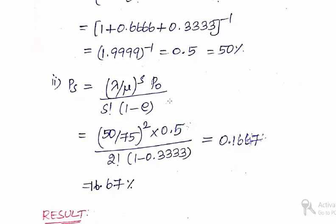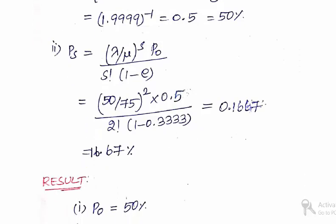The formula is lambda by mu power S into P0 divided by S factorial into 1 minus rho. All the values are known, so by substituting we can get the value of Ps as 16.67 percent.